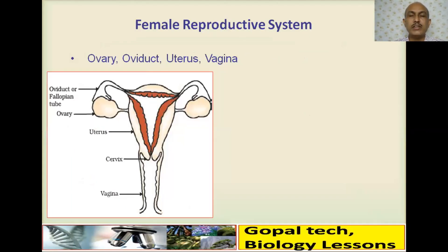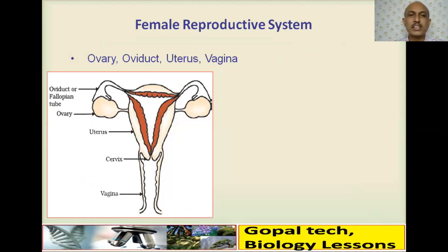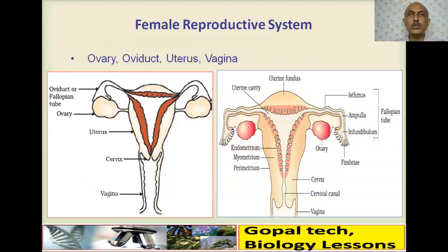The female reproductive system has two ovaries that produce female gametes (ova) and secrete hormones. There are two tubes called the fallopian tubes (oviducts), which are the site of fertilization and carry both fertilized and unfertilized ova. Then there is the uterus, which has three layers: perimetrium, myometrium, and endometrium. The endometrium plays a very important role during the reproductive cycle.